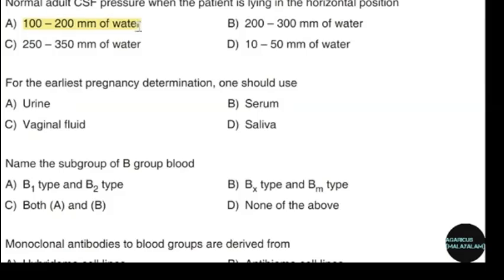For the earliest pregnancy determination, one should use. Correct answer: option B — Serum.